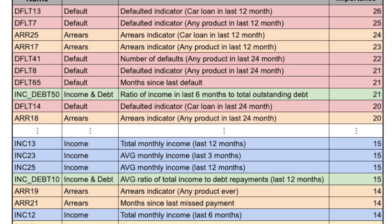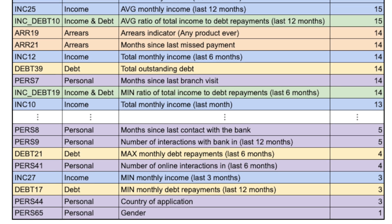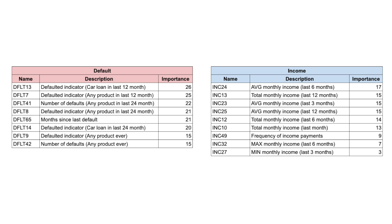Before we start, you may want to check out a previous video where I discuss how to do feature selection with an interpretability mindset. To summarize, I explain how you should divide a large set of features into smaller groups of similar features. Then, to reduce the amount of redundant features used to train a model, you can select the most predictive features from each group. You can do this manually when you have a small number of features, but as your feature set grows, you will need some help. This is where hierarchical clustering comes in.